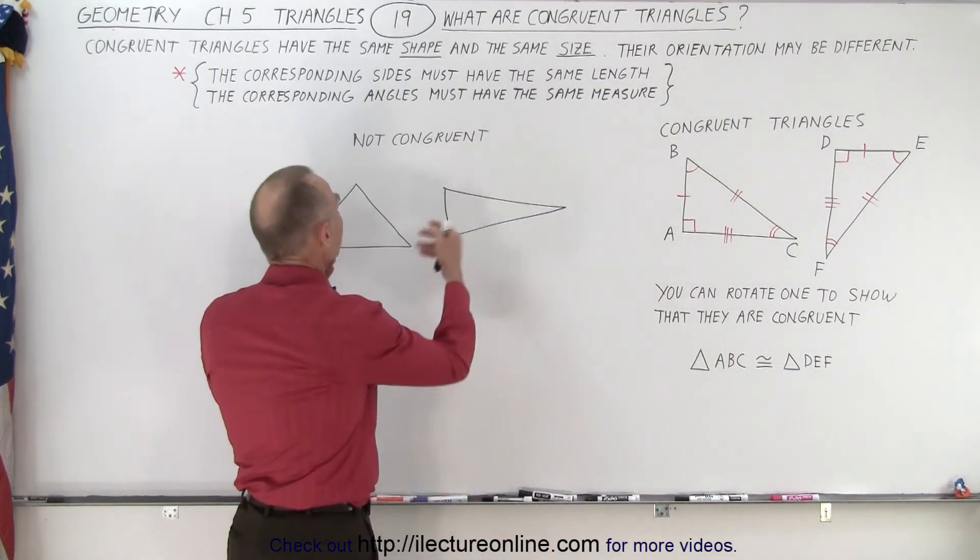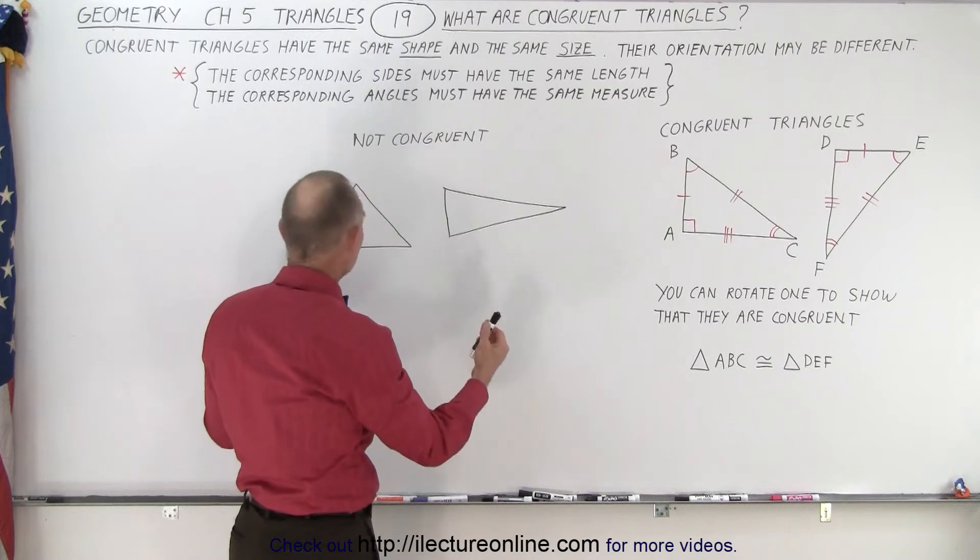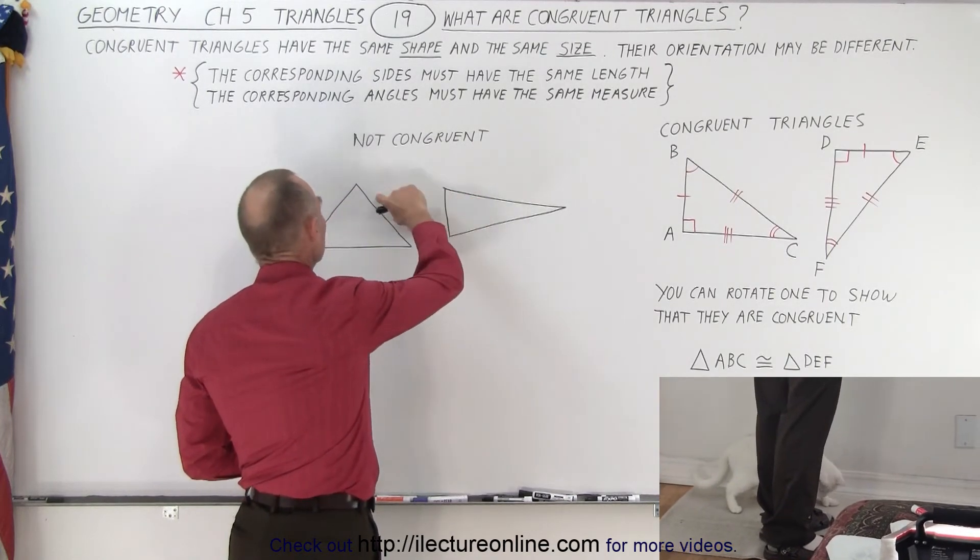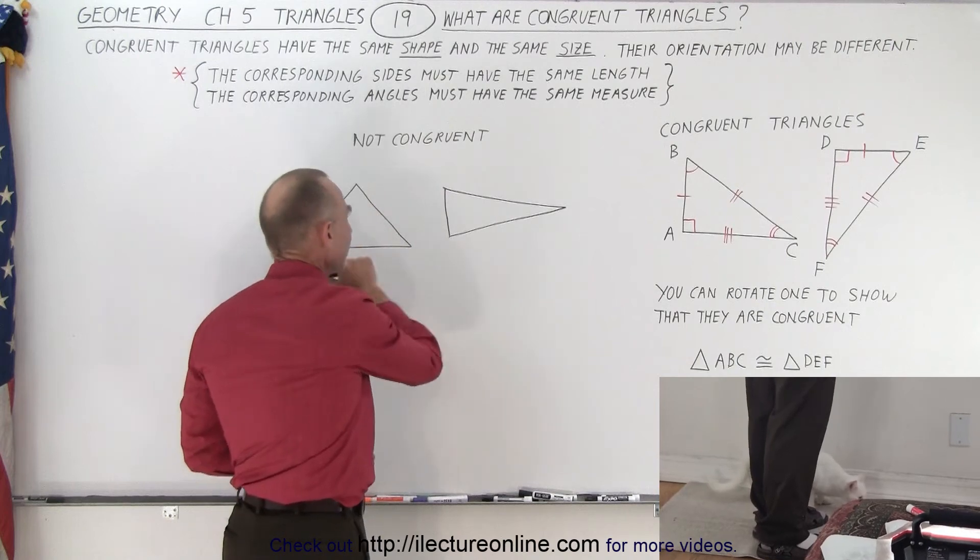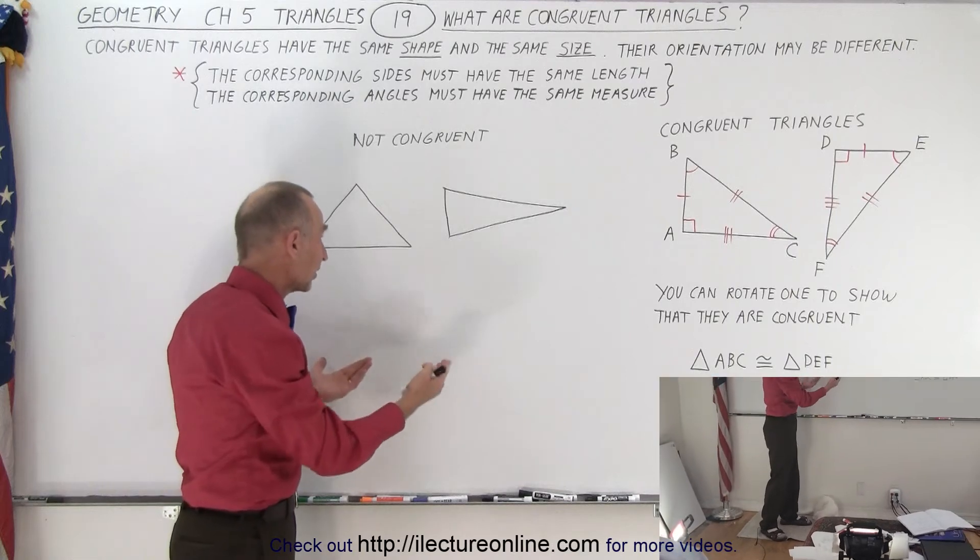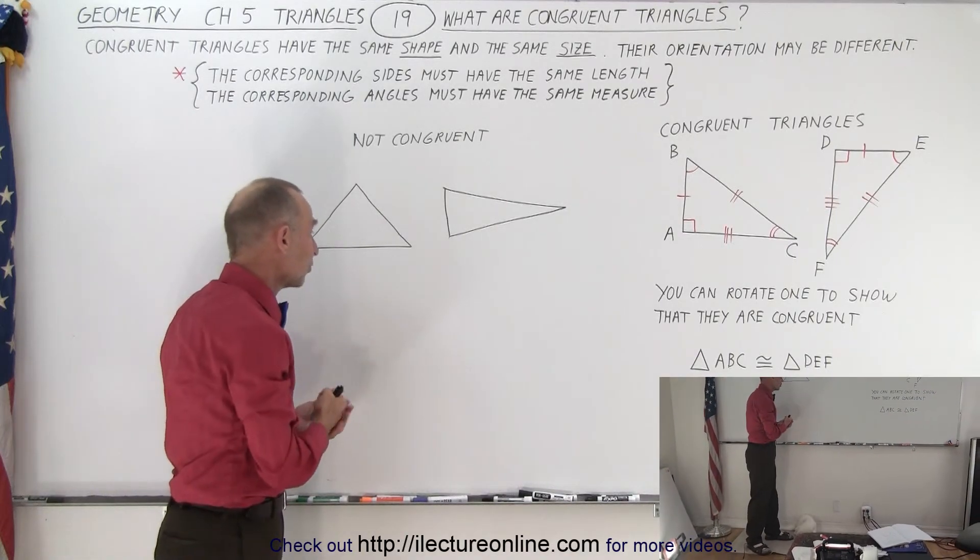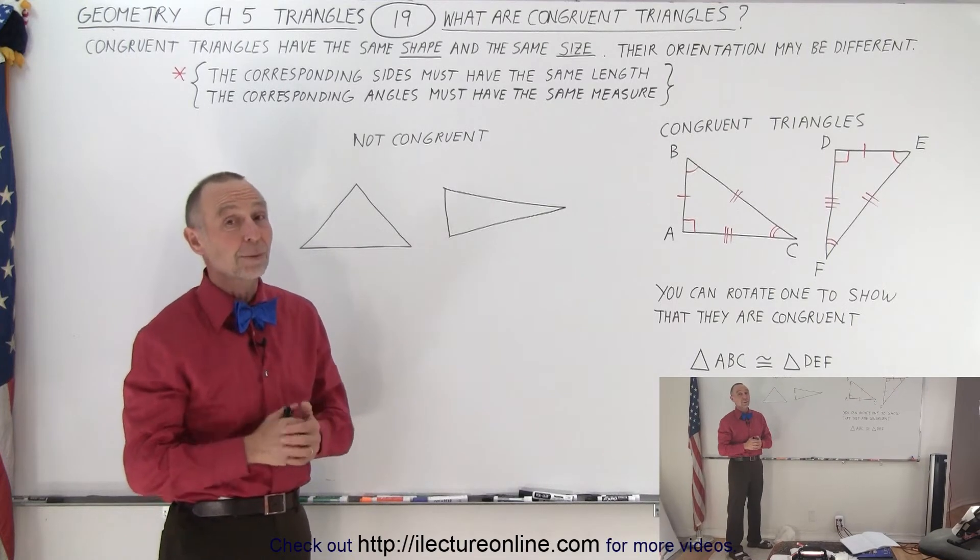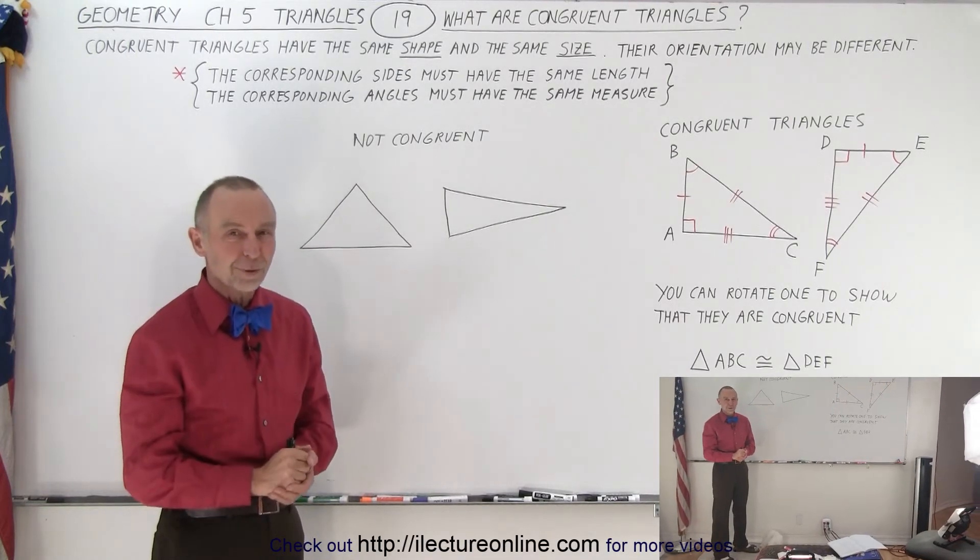Here's a quick picture of two triangles that are not congruent, because it is quite obvious that the length of this side has no corresponding side over here that has the same length. So automatically, when you find one side that does not have the same length as any of the sides of the other triangle, automatically they will not be congruent. And that is what we mean by congruent triangles.